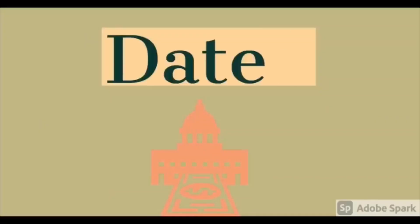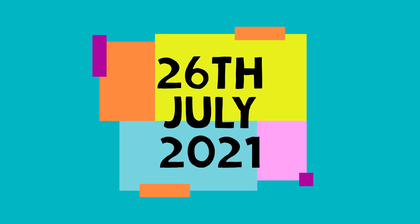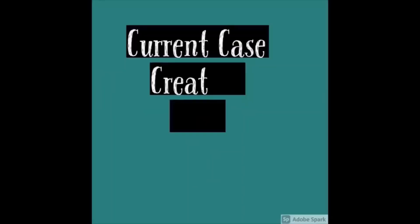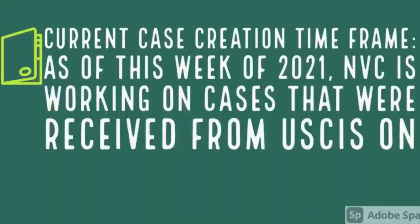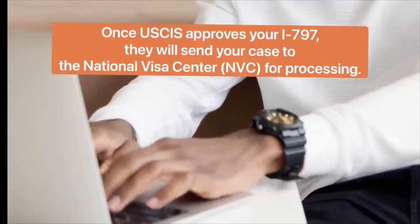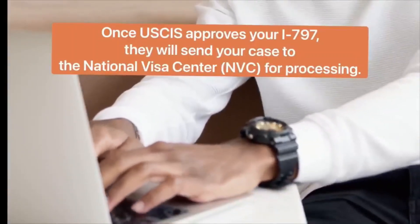Let's talk about this week's processing time. The current case file creation timeframe as of this week of 2021 is that NVC is working on cases that were received from USCIS on a specific date. Once USCIS approves the I-797, they will send the case to the National Visa Center for processing, and NVC will then create your case and enter the data from your petition into the system.